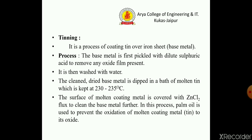The next hot dipping method is the tinning process — it is the process of coating tin on an iron sheet. In this process, the base metal is first pre-treated with dilute acid to remove the oxide film present on the metal surface, then washed with water. The clean dry base metal is then dipped in a bath of molten tin kept at 230–235°C. The surface of the molten coating metal is covered with zinc chloride flux to clean the base metal further. Palm oil is used to prevent the oxidation of the molten coating metal to its oxide.